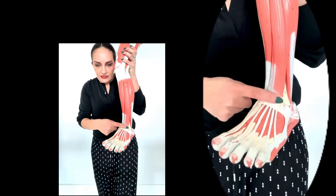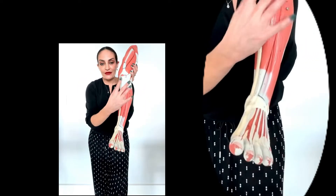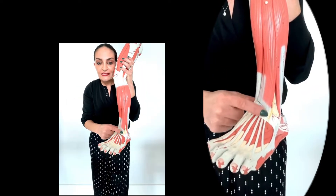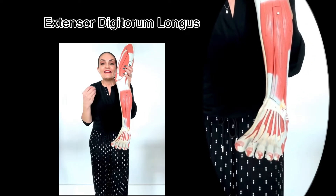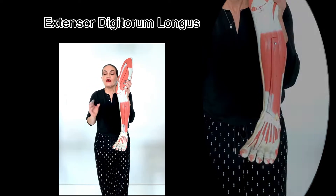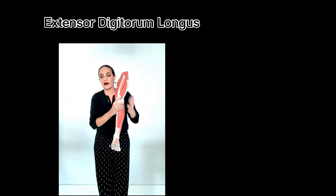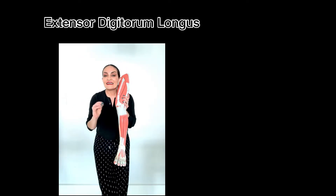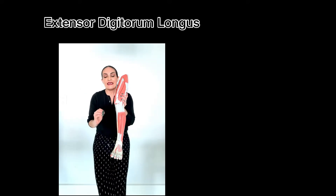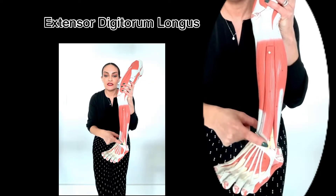Using the same thinking process, you see this muscle right here? This muscle goes to the digits and is on the extensor side because it's in the anterior aspect. Consequently, this muscle is the extensor digitorum longus. You cannot confuse it with the extensor digitorum in the forearm — the extensor digitorum there does not have the word 'longus' because 'longus' is only present in the leg. So L for longus, L for leg. Consequently, this is the extensor digitorum longus.